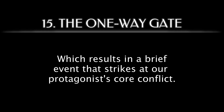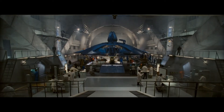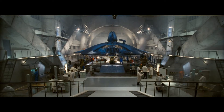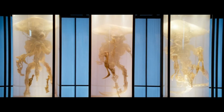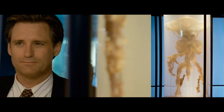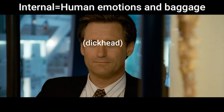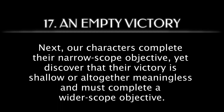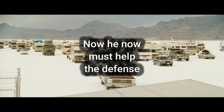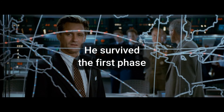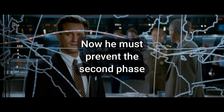This results in a brief event that strikes at our protagonist's core conflict: the government possesses alien technology and understanding, and there's no turning back from here. We receive needed answers alongside our characters, relating to both their external journeys and their internal conflicts. The aliens are easily killed beneath their armor and technology, and human beings must set aside their differences to survive a common threat. Next, our characters complete their narrow scope objective, yet discover that their victory is shallow or altogether meaningless, and must complete a wider scope objective. Russell leads the RV migration to safety but places them in the center of the invasion defense, and Whitmore gains a handle on the situation, but another countdown promises the end of humanity.